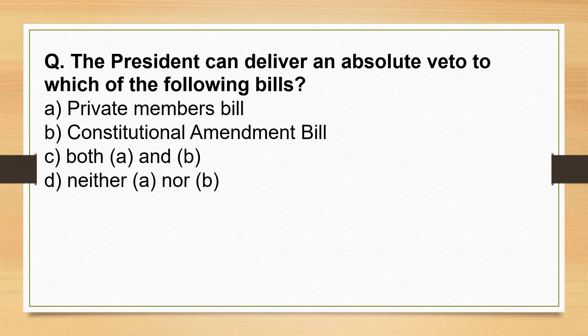The President can deliver an absolute veto to which of the following bills? He can deliver an absolute veto to a Private Member's Bill — this is correct. However, he has no power to deliver an absolute veto to a Constitutional Amendment Bill. So the correct option is Option A.